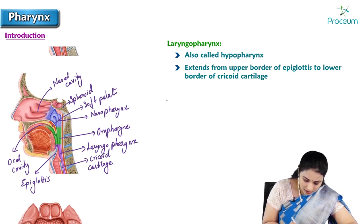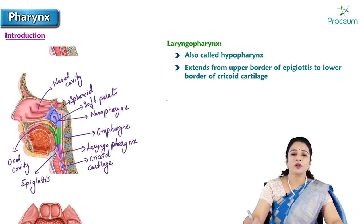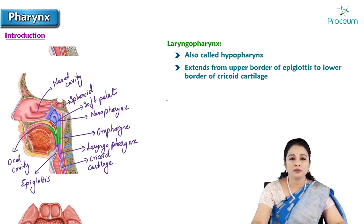The purple colored structure shown here is the laryngopharynx, which continues below with the esophagus. It extends from the upper border of the epiglottis till the lower border of the cricoid cartilage.